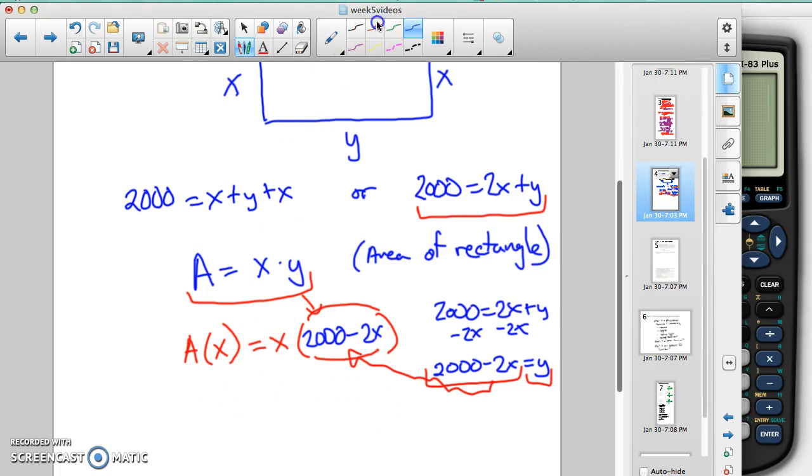And then we're going to distribute and find our area function in terms of x. So our area function in terms of x is going to be 2,000x, distributing this x times this, minus 2x squared.